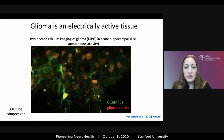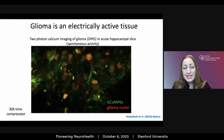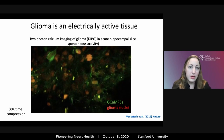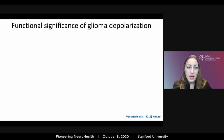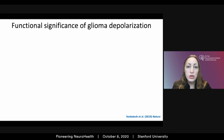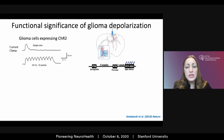This two-photon calcium imaging video of glioma shows very clearly that this cancer is an electrically active tissue — that's not the way we've been thinking about it. It suggests there may be an important functional significance of these frequent depolarizing events in the glioma, which makes sense because during brain development multiple populations of neural stem and precursor cells are regulated by voltage-dependent mechanisms, and membrane depolarization promotes proliferation and differentiation of neural precursor cell populations.